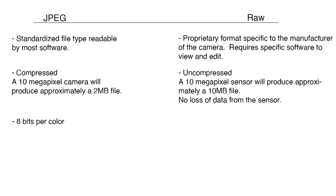JPEGs have a bit depth of 8 bits per color. Bit depth refers to a digital means of quantifying colors and shades. A higher bit depth allows for a wider range of colors and shades but increases file size, and anything over 8 bits can't be saved as a JPEG. RAW files are at least 12 bits per color, allowing for a much wider range of colors and shades.